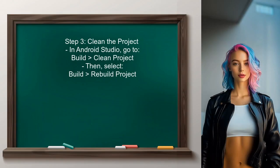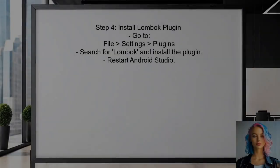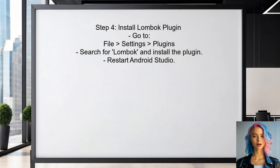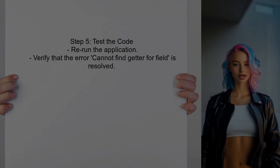After updating the Build.Gradle file, perform a clean build of the project. This can be done by selecting the Clean Project option in Android Studio. If the issue persists, consider using the Lombok plugin for Android Studio — this plugin can help integrate Lombok more effectively with the IDE. Finally, test your code again. If everything is set up correctly, the error regarding the getter should no longer appear.